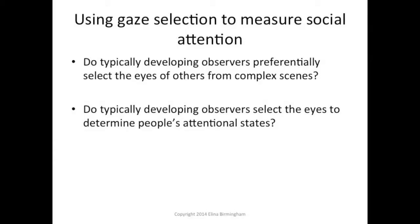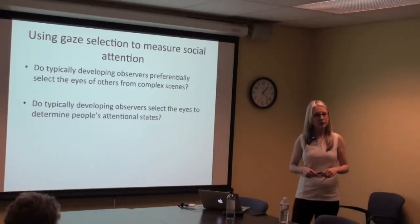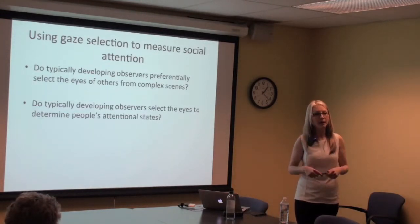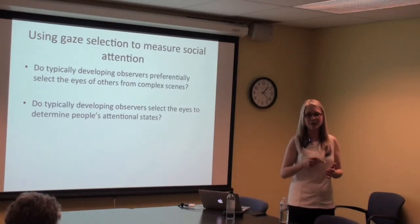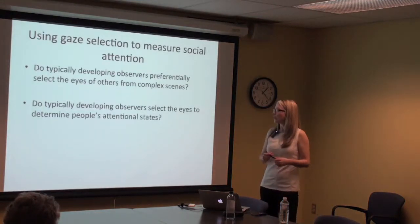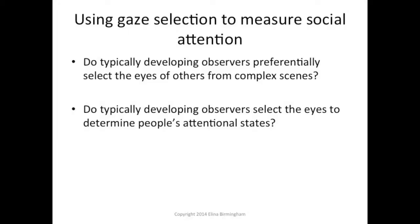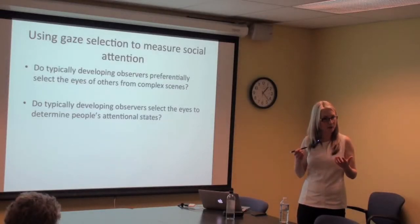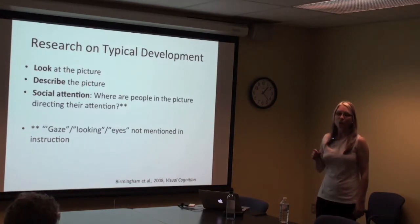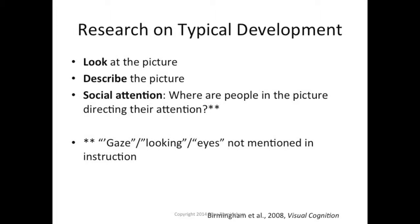My question was: do typically developing observers preferentially select the eyes from complex scenes? At the time, in 2008 when this was published, this was not well understood — most research had been done with artificial stimuli. I wanted to present scenes to people and see if there's a preferential bias to select people's eyes over other things in a picture. The second question was: do typically developing observers select the eyes to determine people's attentional states?